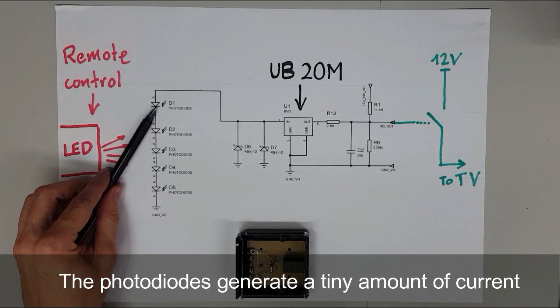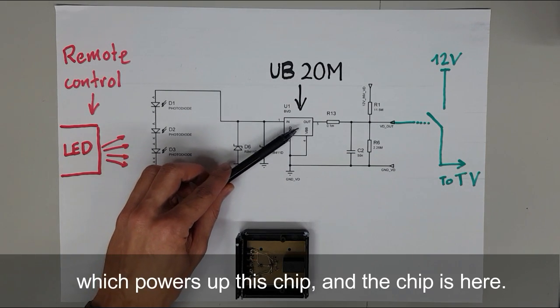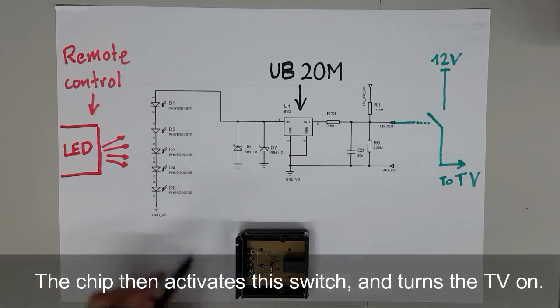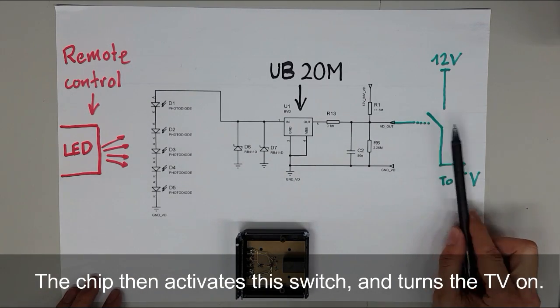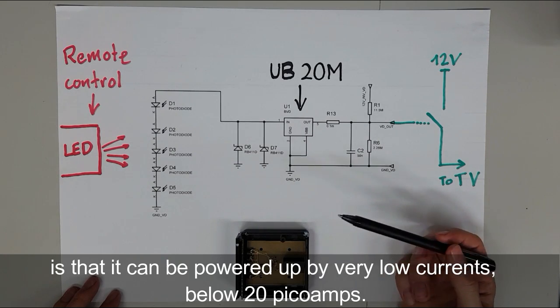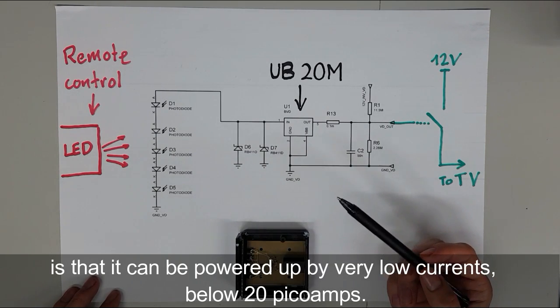The photodiodes generate a tiny amount of current, which powers up this chip. And the chip is here. The chip then activates this switch and turns the TV on. The clever thing about this chip is that it can be powered by very low currents, below 20 pA.